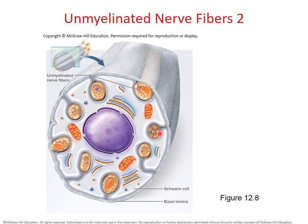Unmyelinated axons are not completely naked — they do sit in grooves in the Schwann cell — but along their entire lengths they are exposed to the environment. An action potential requires the rapid movement of sodium and potassium ions into and out of the cell. Under a myelin sheath, an axon cannot experience that movement of ions — only at nodes of Ranvier can ions flow through the myelinated portion. In unmyelinated fibers, because they are connected to the surface through the groove, sodium and potassium are free to flow along the entire length of the axon, not just at nodes of Ranvier.